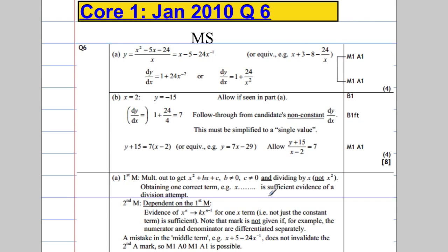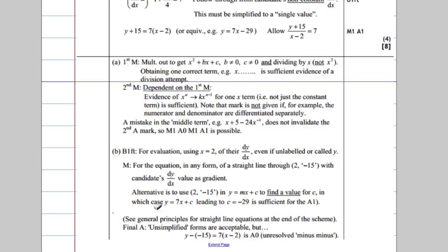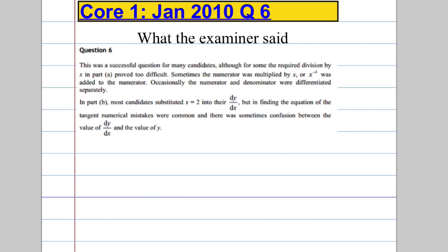Okay, let's have a look at the mark scheme. Make sure we've done it right there. So, really quickly. Yeah, y equals 7x minus 29. You can have a look at where the other marks are coming from if you wish. And there's some notes on the mark scheme. And over here, what did the examiner say? Okay, very successful question. Some people couldn't divide by x. Forgot how to chop it up and then write it in index form. So, careful. Make sure you know how to do that.